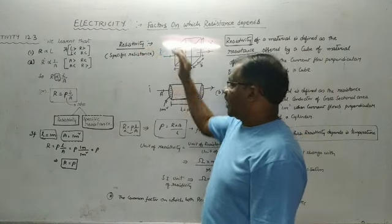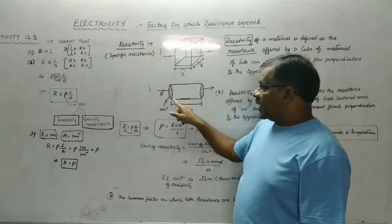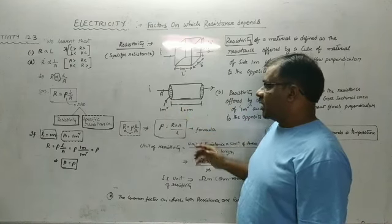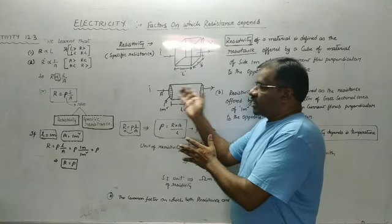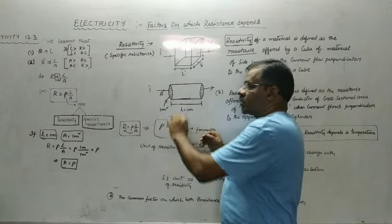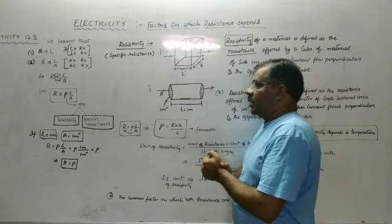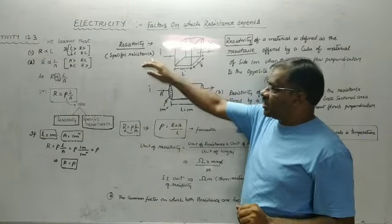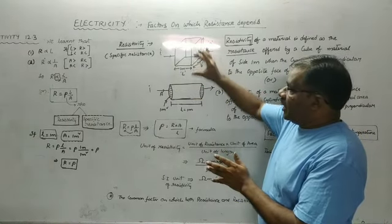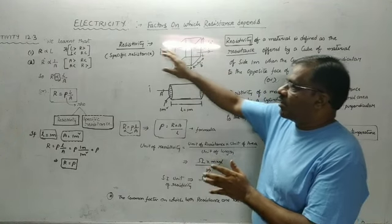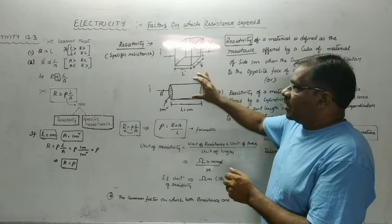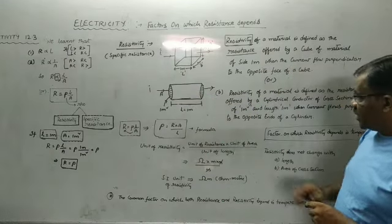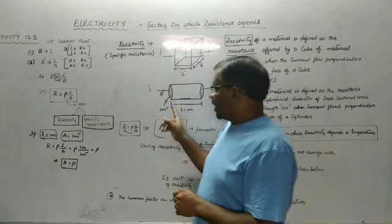To define resistivity another way: take a material wire of 1 meter in length with an area of cross-section of 1 meter square. The resistance offered to the flow of current through this material is defined as resistivity. So resistivity is nothing but resistance, but when a material offers resistance because of its dimensions, we call it resistivity or specific resistance. Every material will offer resistance to the flow of current, and when that is calculated in this way, we call it specific resistance.